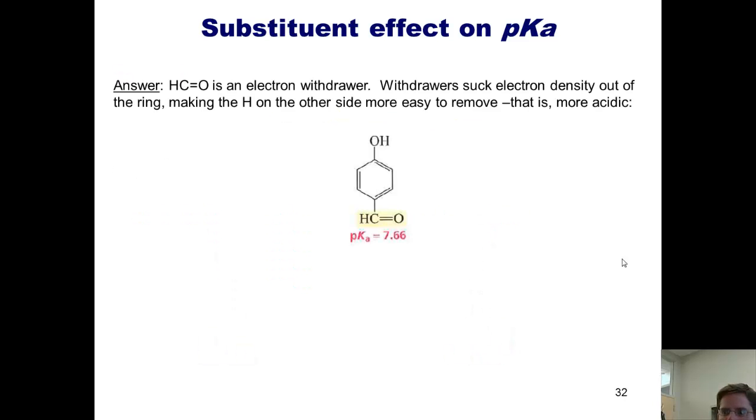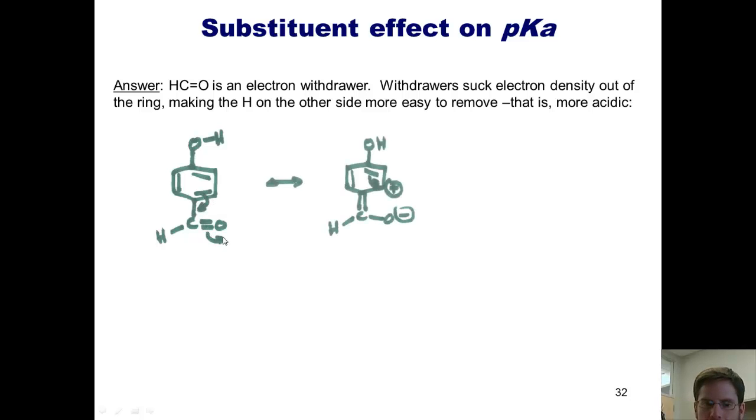Let's first take a look at the compound on the left. As you'll note from our earlier discussion, the aldehyde group shown here is an electron withdrawer. You should remember that electron withdrawers suck electron density out of the ring. I can illustrate this by using the resonance structure shown here.